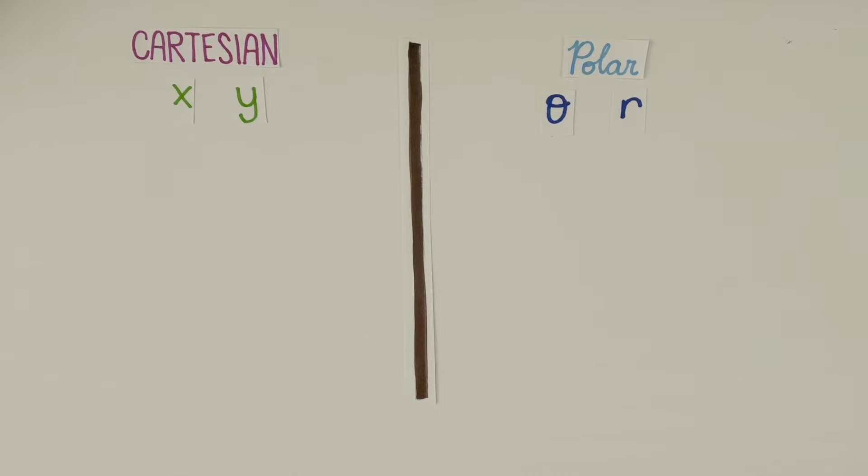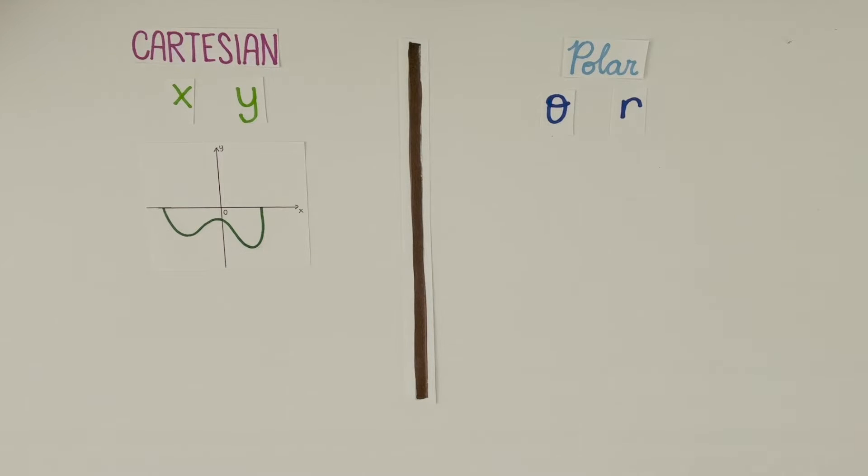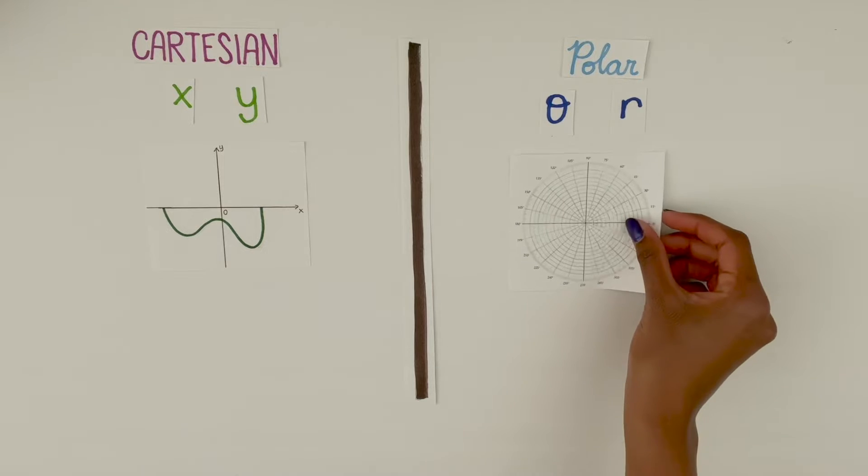Also, instead of being graphed on a traditional x and y coordinate plane with a square grid, polar equations are graphed on circular planes, like this.